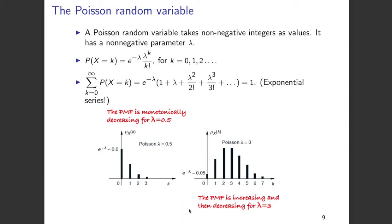If you sum up all the probabilities — that is, the probability of X equals k for k going from 0 to infinity — you will get 1. Looking closely at this sum, you can see there is an exponential series: e to the power of minus lambda is taken out as a common factor, and inside you have 1 plus lambda plus lambda squared over factorial 2, plus lambda cubed over factorial 3, and so on. It is nothing but an exponential series.